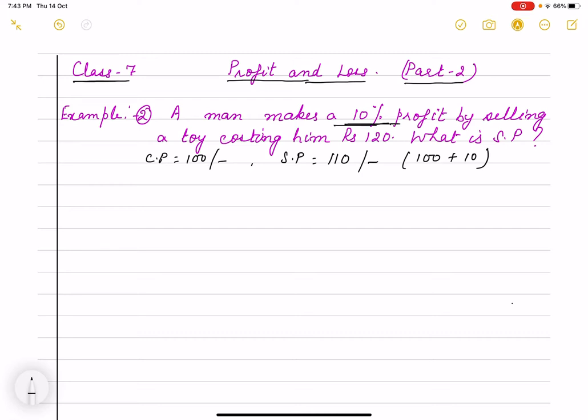Now this question is: a man makes 10 percent profit, means he wants that if he bought in 100 rupees, then he will take 10 rupees profit, that means he will sell in 110 rupees. But here he is selling a toy costing him rupees 120. He bought it for 120 rupees and he wants profit 10 percent. What is his SP? So I have to find out selling price.